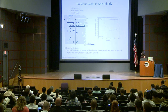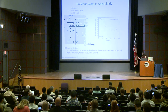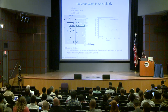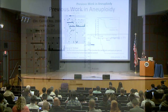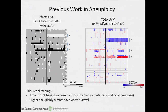There's been quite a bit of work done on aneuploidy and uveal melanomas in the past. In particular, a 2008 paper finds that about 50% of tumors have chromosome 3 loss — white denotes a loss, black denotes a gain in this heat map. Chromosome 3 loss of heterozygosity is a marker for metastasis as well as poor prognosis, and higher aneuploidy tumors tended to have worse survival. Comparing to our TCGA-UVM cohort of 79 tumors using Affymetrix SNP-6 chips, the overview looks fairly similar, with about half having chromosome 3 loss, and patterns in chromosomes 6 and 8 also looking very similar.